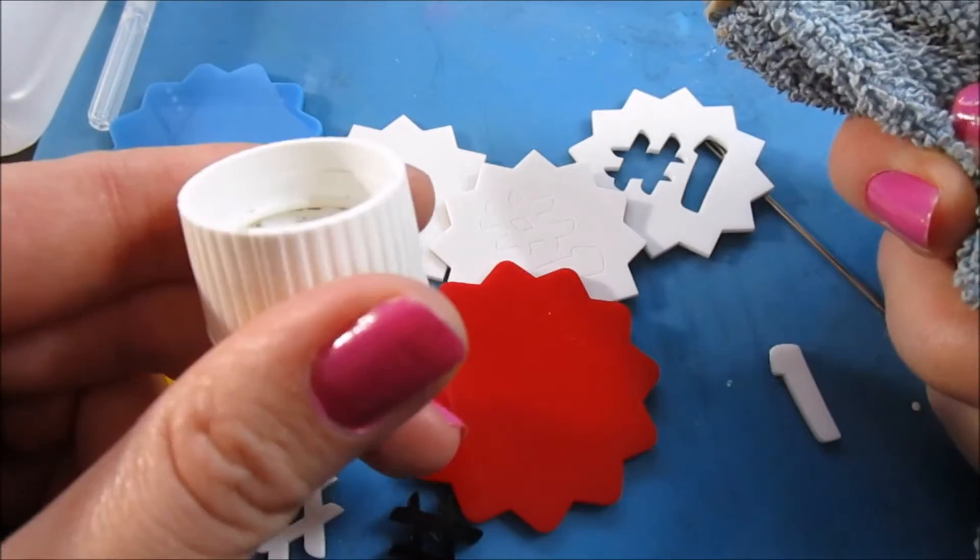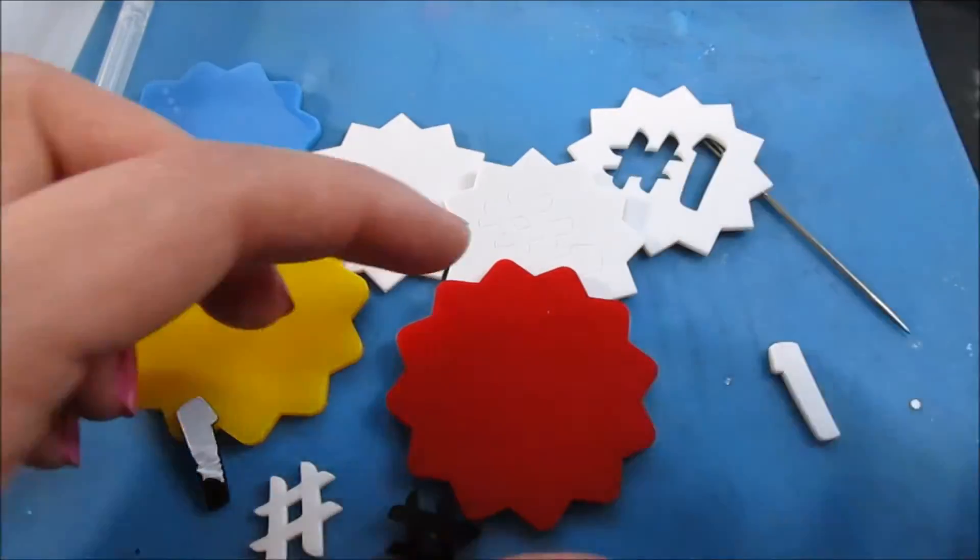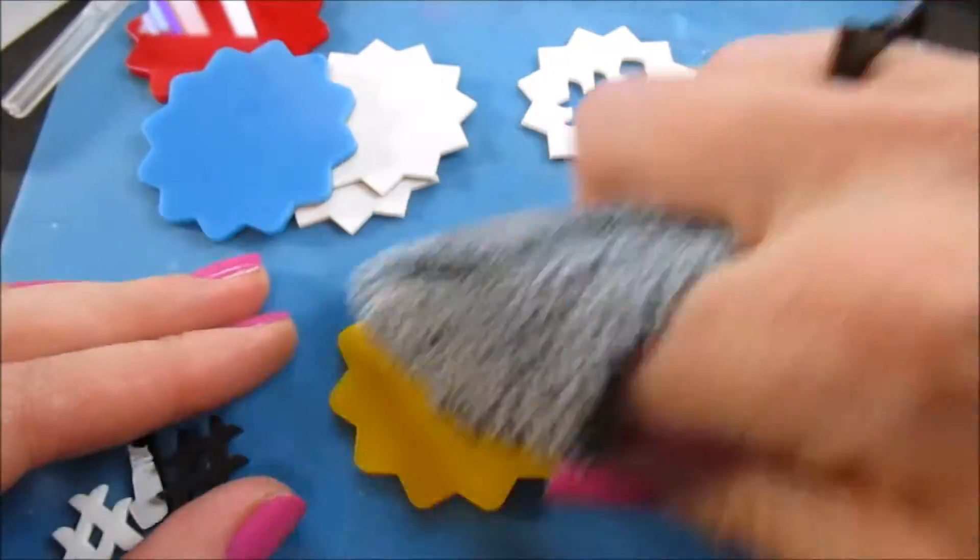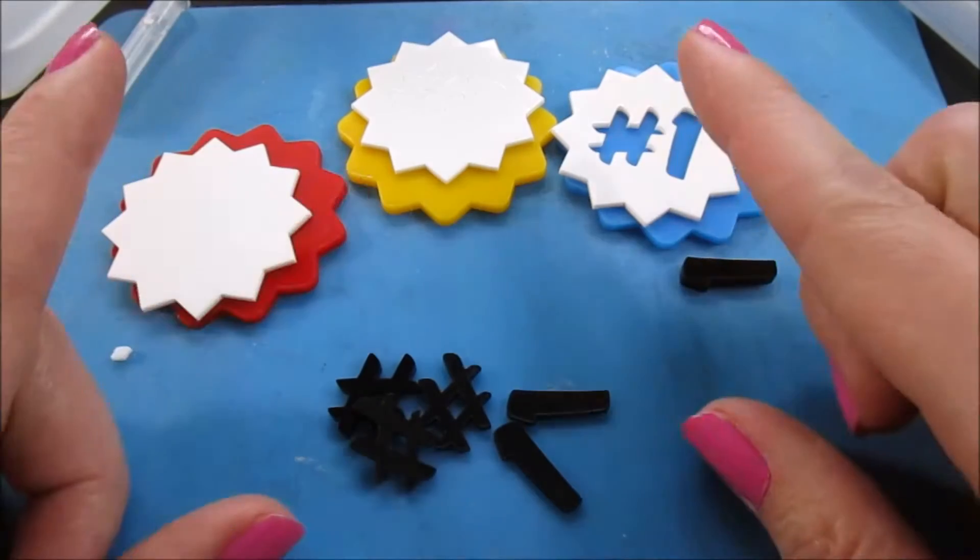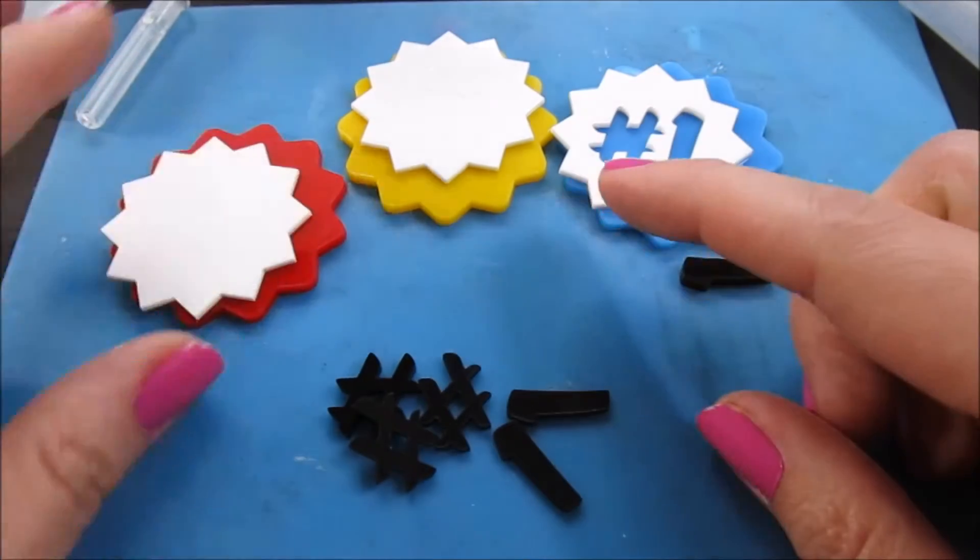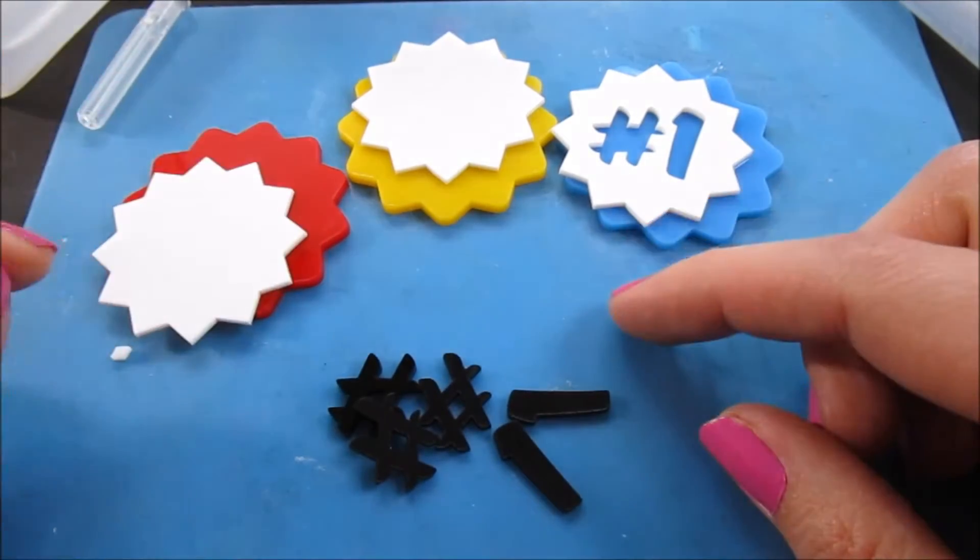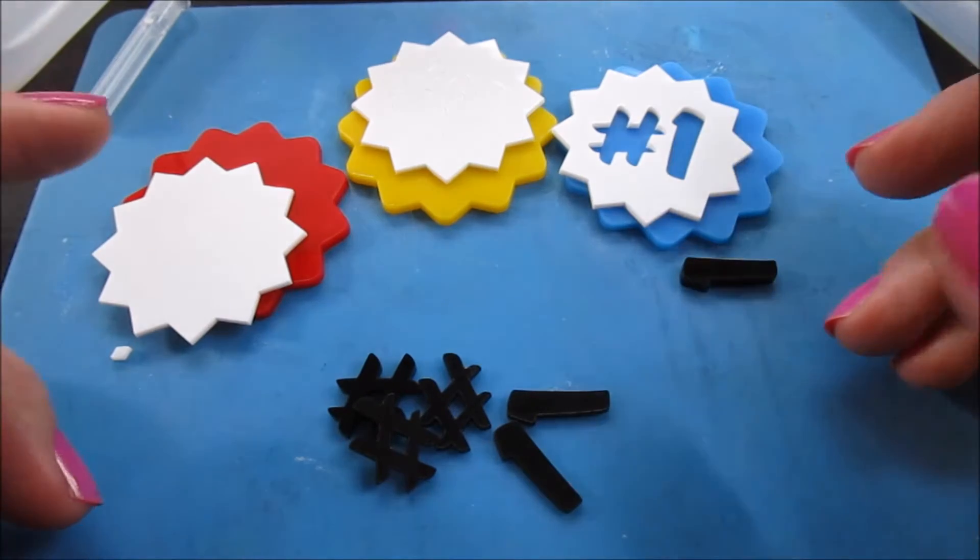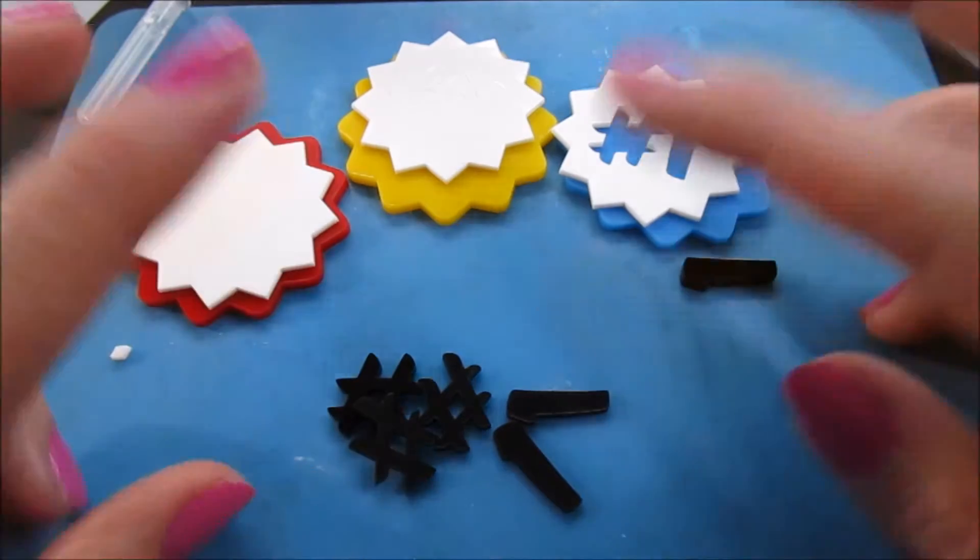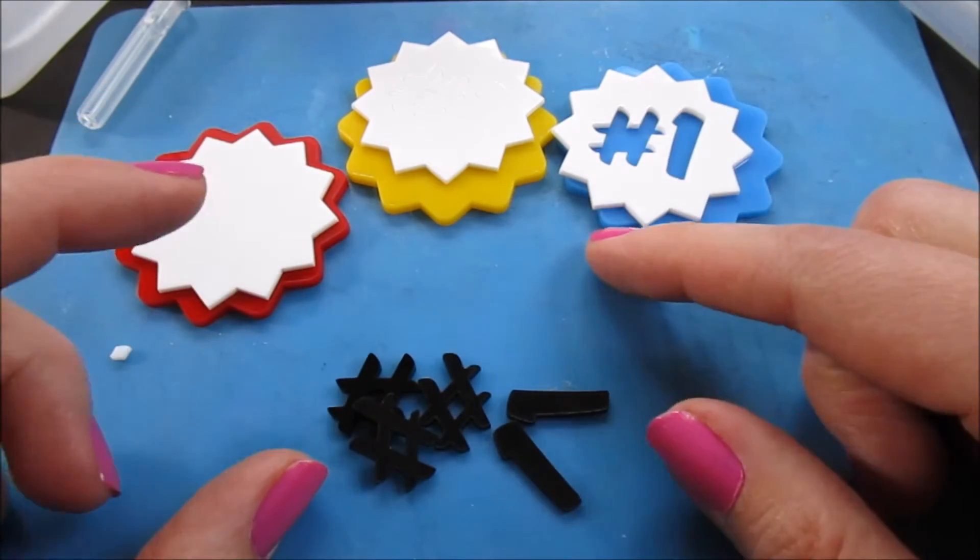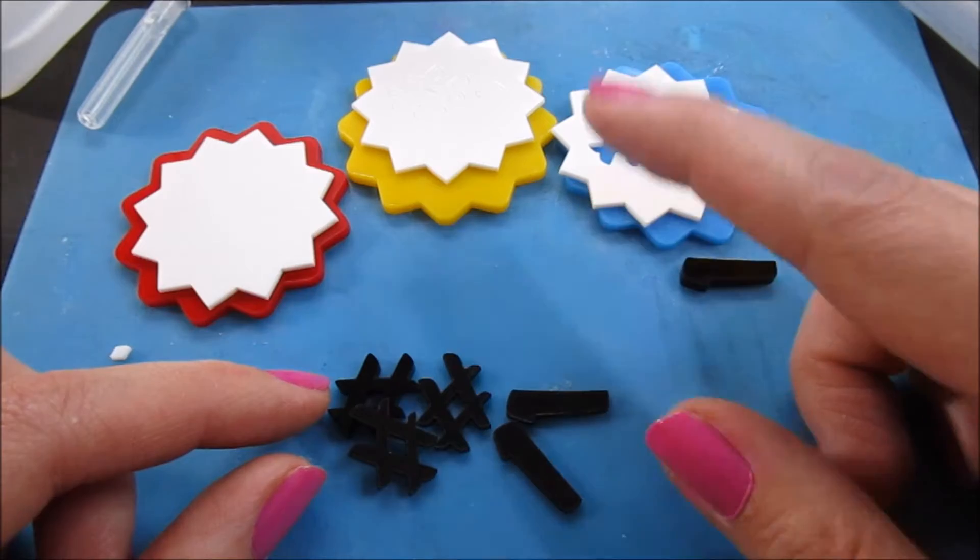Essentially I just take this microfiber sort of cloth and a little bit of the Novus number two and give it a bit of polish. Okay, so now that I've got everything all polished up and the paper backings taken off of the back, we're going to assemble them.